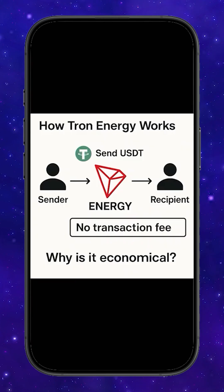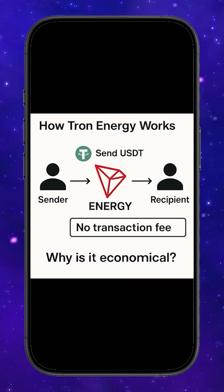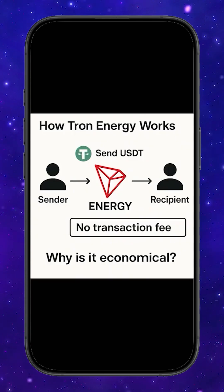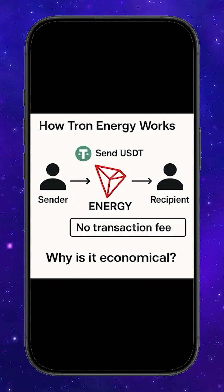Here is the process you're seeing on the screen: Sender → Energy → Recipient. Energy acts like prepaid fuel, so when you send USDT, the cost is taken from your energy balance, not from your TRX. Why is this important? Because energy is cheaper than burning TRX directly.